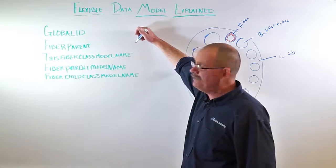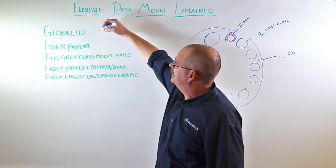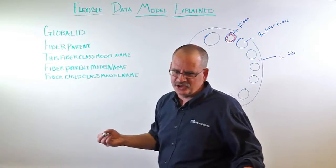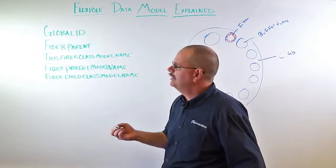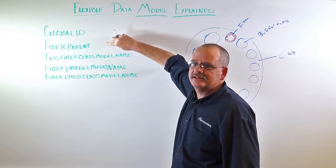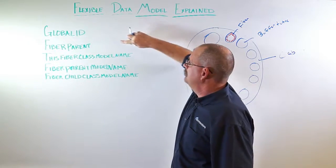There are five fields that are utilized by the flexible data model. First is Global ID. Global ID is assigned by the GIS. We have no control over it. The second, fiber parent. Fiber parent, that is the global ID of the parent object.